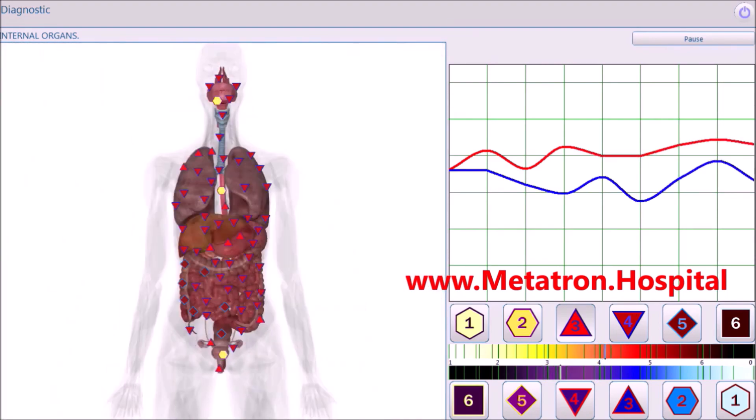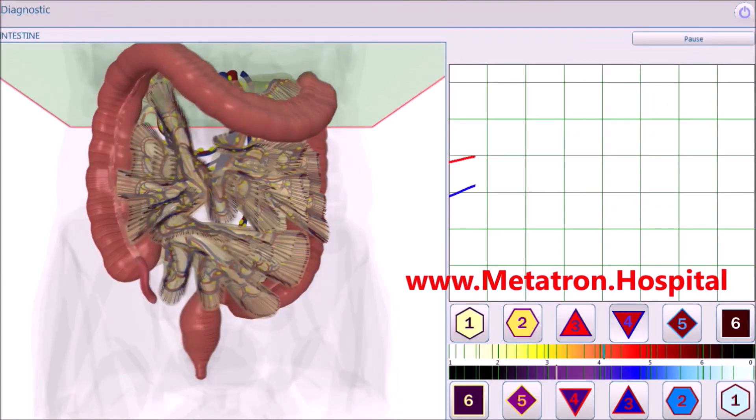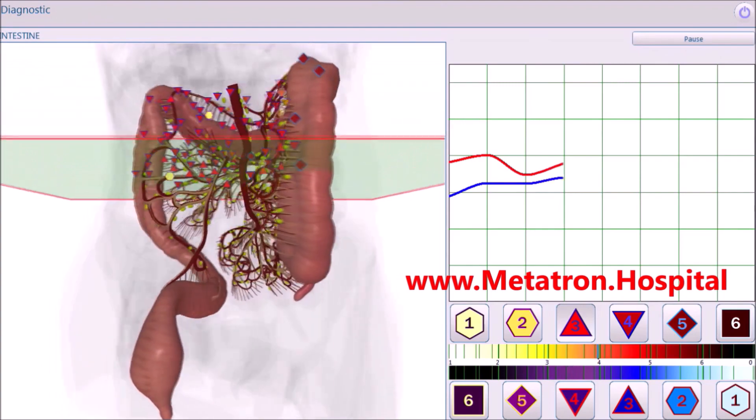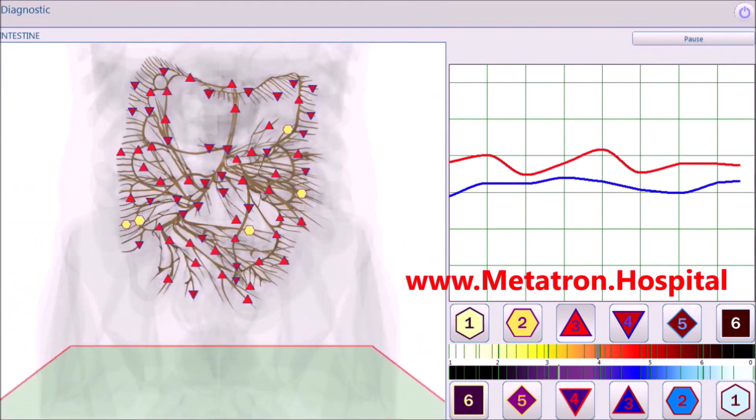Distance treatment is especially ideal as a general support 2 to 3 times a week. A remote treatment session is usually shorter, around 30 minutes. During one session, 3 to 5 organs, body parts, or 1 to 2 systems can be treated.